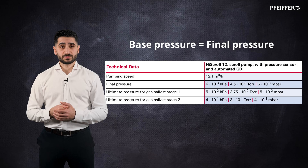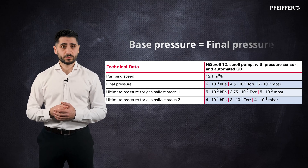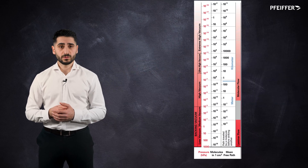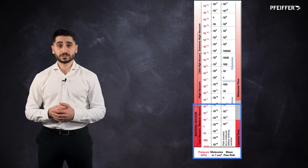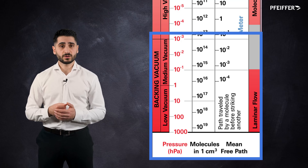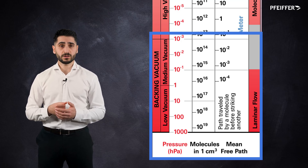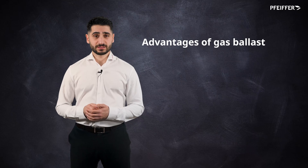Gas ballast is primarily utilized in vacuum pumps operating in the low and medium vacuum ranges, because in these ranges there is a higher concentration of gases containing condensable vapors.